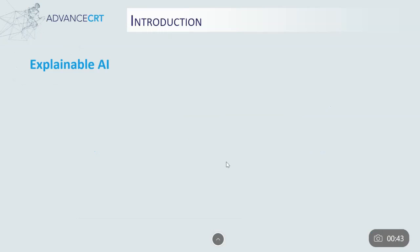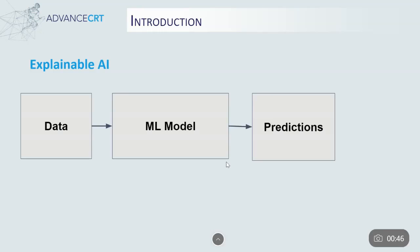So typically in AI-based systems, we feed the data to the model and get the predictions. But when these automated systems are used in making crucial decisions, such as diagnosing a disease, it's important to understand how the model operates and or why a certain prediction was made.